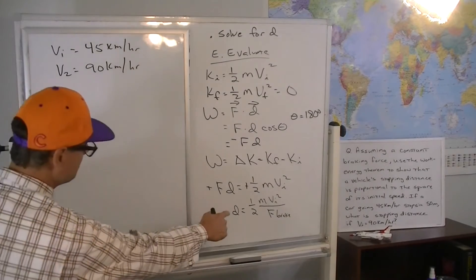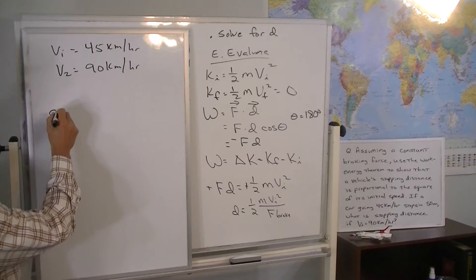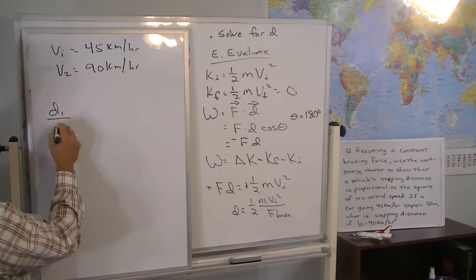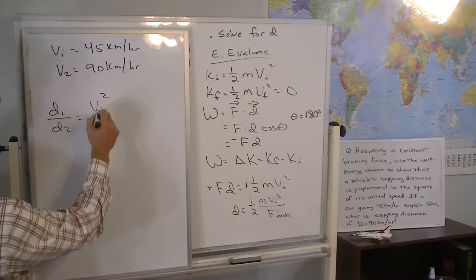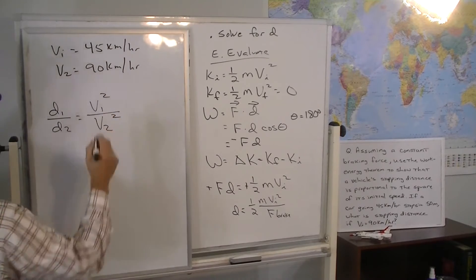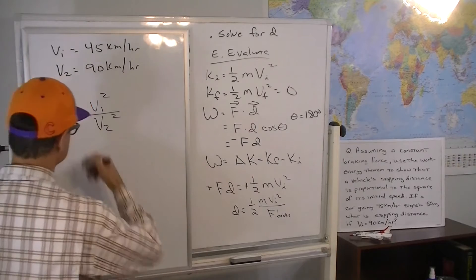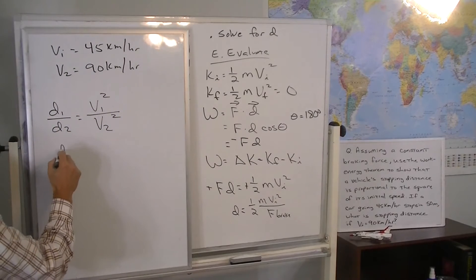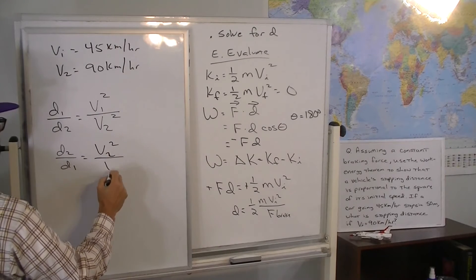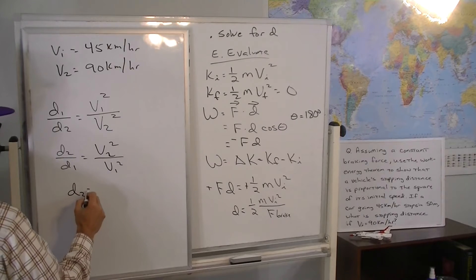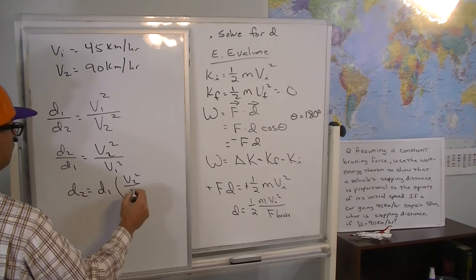So we can use that because the stopping distance is proportional to the square of the initial speed, right? So, d1 over d2, if you want to say it this way, is equal to v1 squared over v2 squared. So, we really want d2 here, so we should have written this a different way. Just take the reciprocal of the whole expression. d2 over d1 equals v2 squared over v1 squared. d2 equals d1 times v2 squared over v1 squared.